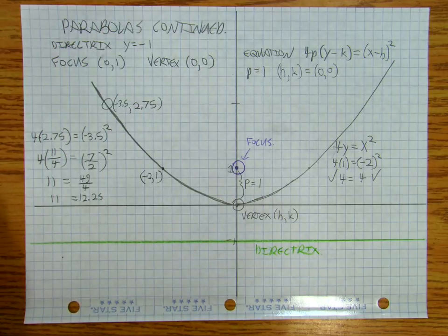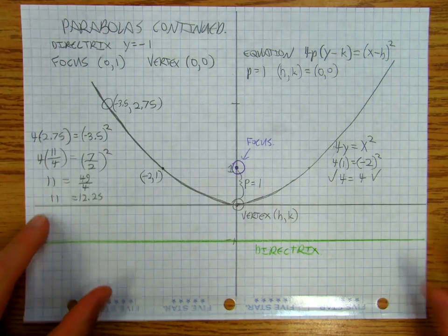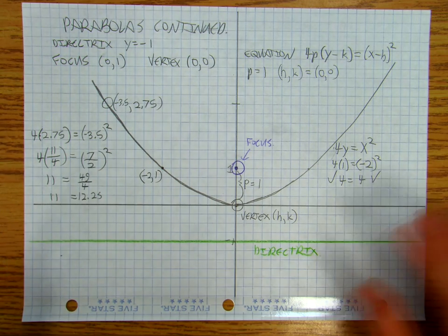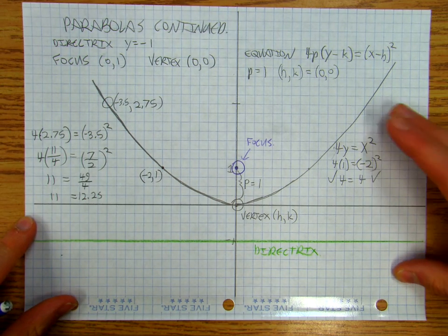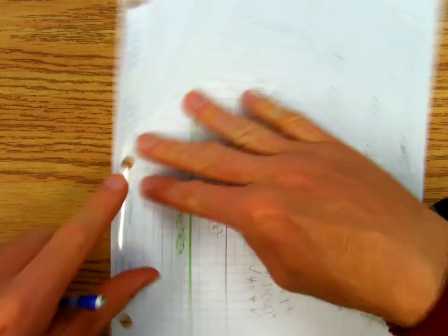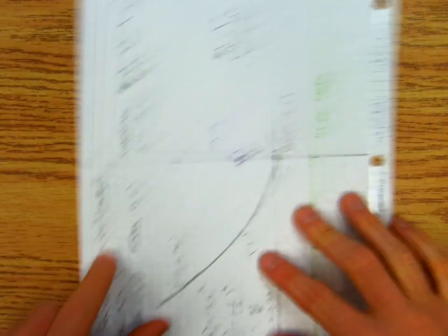Okay, so then in the next video, what we're going to do is we're going to look at parabolas that are flipped. We have upright, down, right, and left.